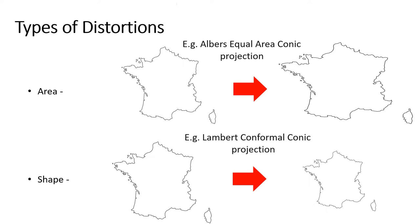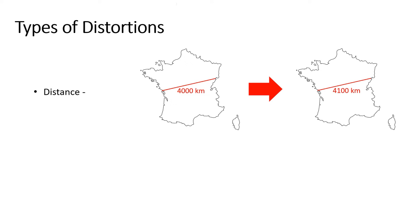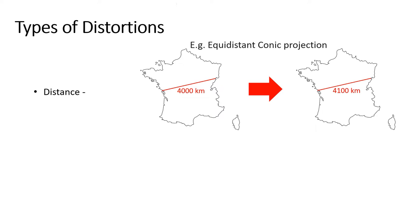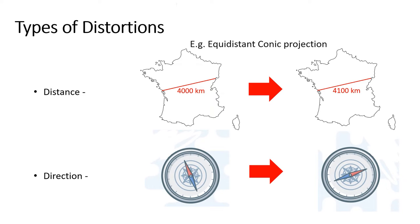The Lambert Conformal Conic projection is an example of an equal shape projection. The distance projection preserves the distances between certain points by maintaining the scale of a given dataset. The Equidistant Conic projection is an example of an equidistant projection. Finally, we have direction — these projections preserve the direction from one point to all other points by maintaining some of the great circle arcs. The Lambert Equal Area Azimuthal projection is an example of a projection that preserves direction.